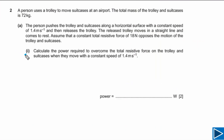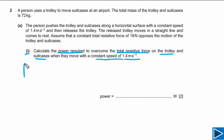For part A1 we need to calculate the power required to overcome the total resistive force on the trolley and suitcases when they move at a constant speed of 1.4 meters per second. Power required equals power dissipated due to resistive forces.